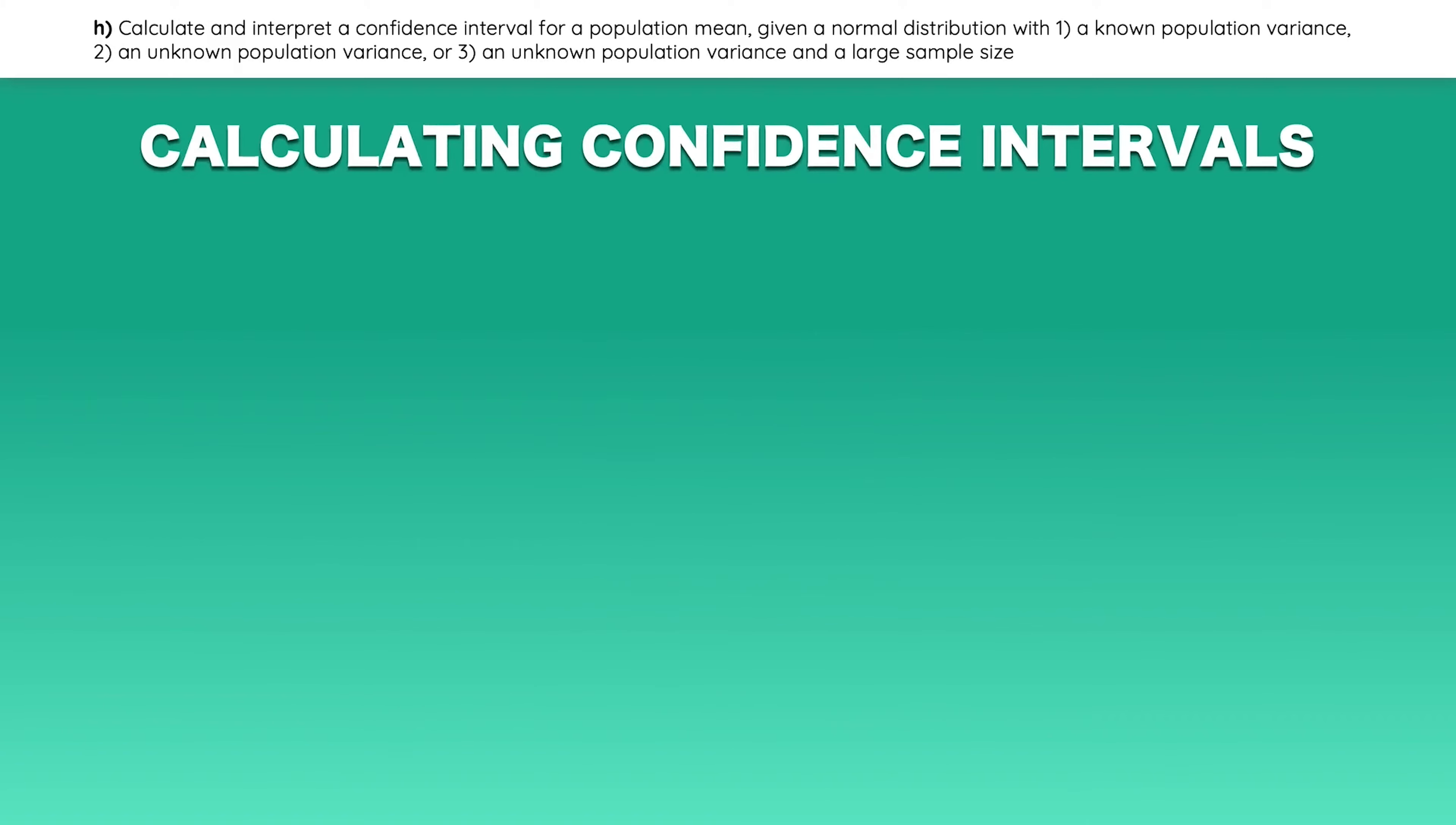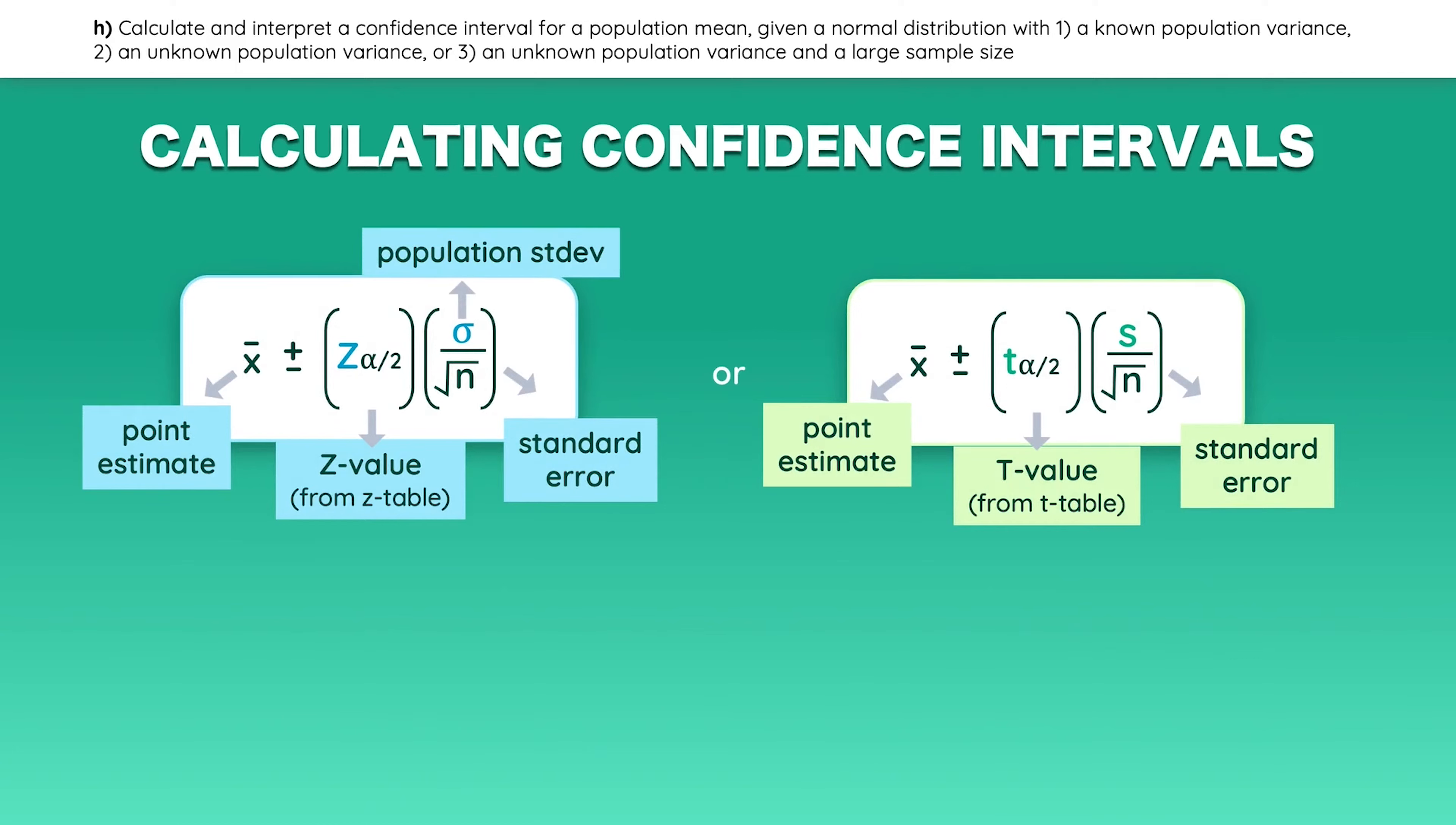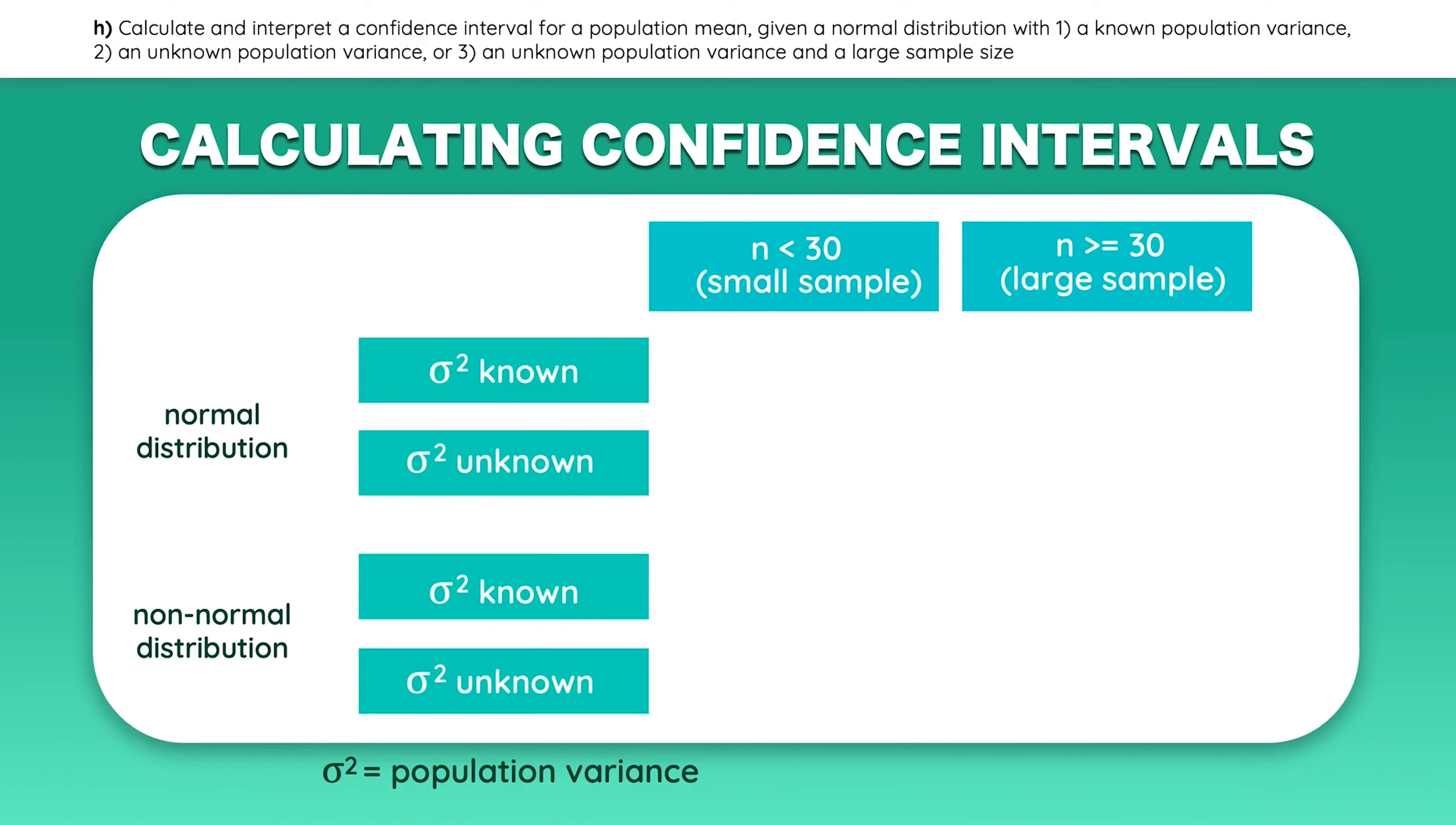To calculate a confidence interval, you must use one of these two formulas. Let's label each item. Notice that the one with the z value uses the population standard deviation, and the one with the t value uses the sample standard deviation. If you don't remember how to find the z values in the z table or the t values in the t table, you can go back to the reading titled Common Probability Distributions to review it. But how do you know which of the two formulas to use? Well, it depends on the information that is given to you in the problem. Here's a quick review sheet.